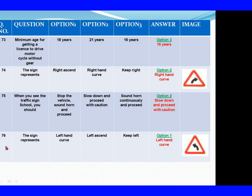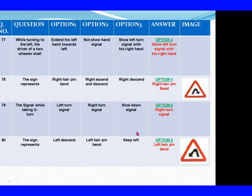Question 76: The sign represents. Option 1: Left hand curve. Option 2: Left ascent. Option 3: Keep left. The right answer is Option 1: Left hand curve. Question 77: While turning to the left, the driver of a two-wheeler shall. Option 1: Extend his left hand towards left. Option 2: Not show hand signal. Option 3: Show left turn signal with his right hand. The right answer is Option 3: Show left turn signal with his right hand.